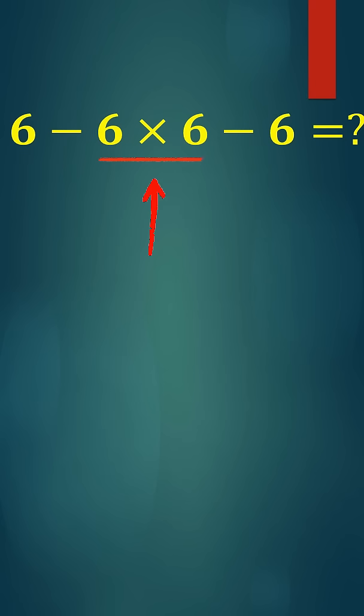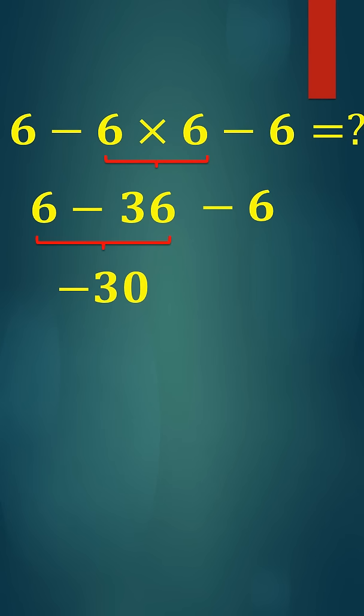So in this problem, we first do the multiplication before subtraction. Six times six equals thirty-six. Now we have six minus thirty-six minus six. We work from left to right. Six minus thirty-six equals negative thirty, and negative thirty minus six equals negative thirty-six.